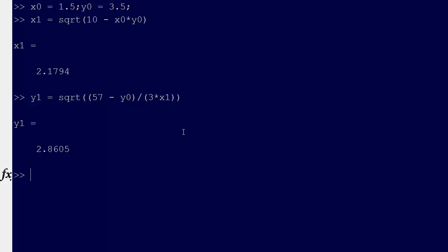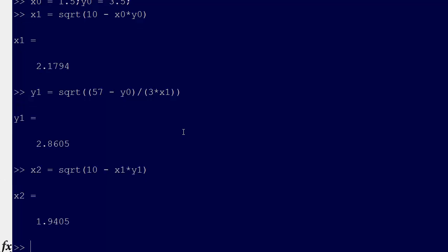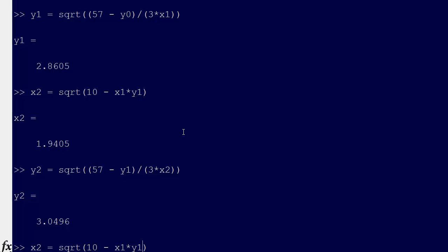Let's do x2 now. So x2 equals, so we use x1 and y1. 1.94. That's good. Now y2, square root of, and we use y1 and x2 here. 3.04. So we're getting there. 1.94, 3.04. That's actually fairly close.